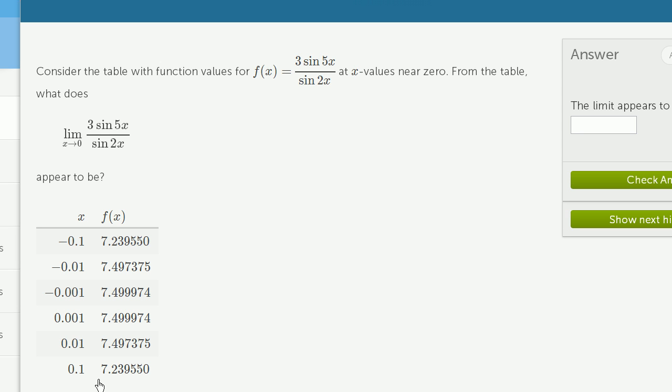Now let's see what happens as we approach zero from above, from values greater than zero. When x is 0.1, it's 7.239550, the same as this value. When it's 0.01, it's 7.497375, the same values here. And when we're at 0.001, approaching from above, we get 7.499974.